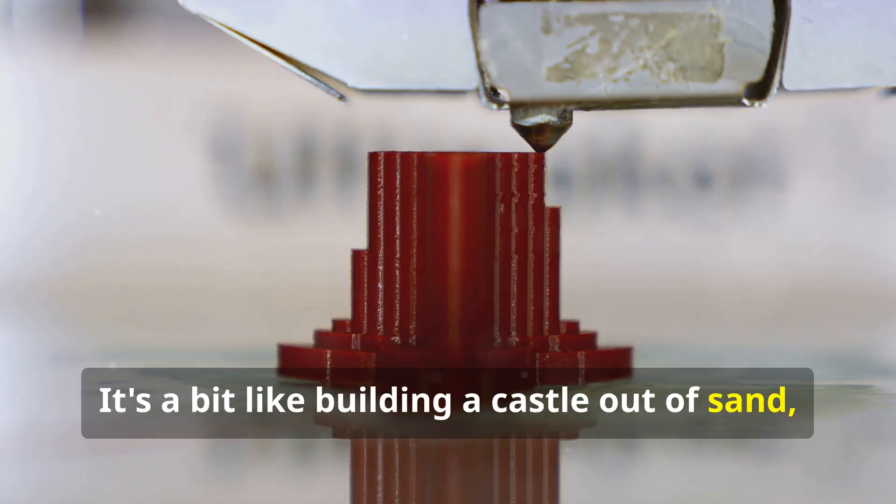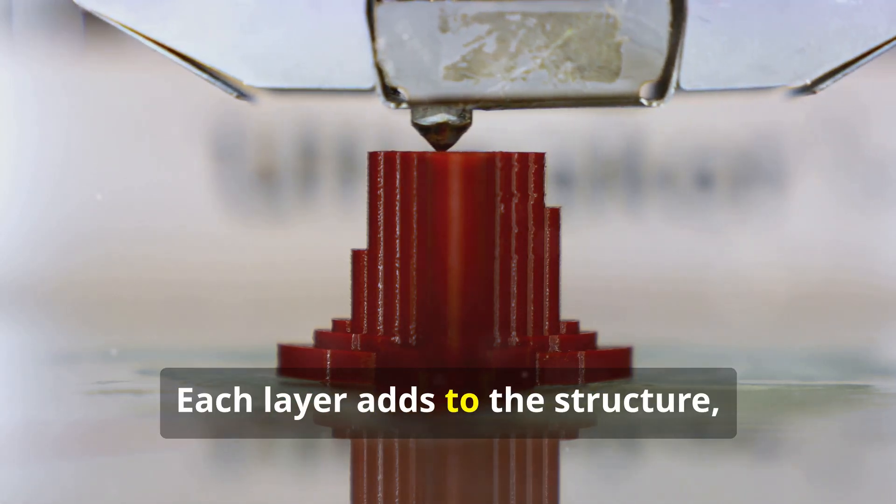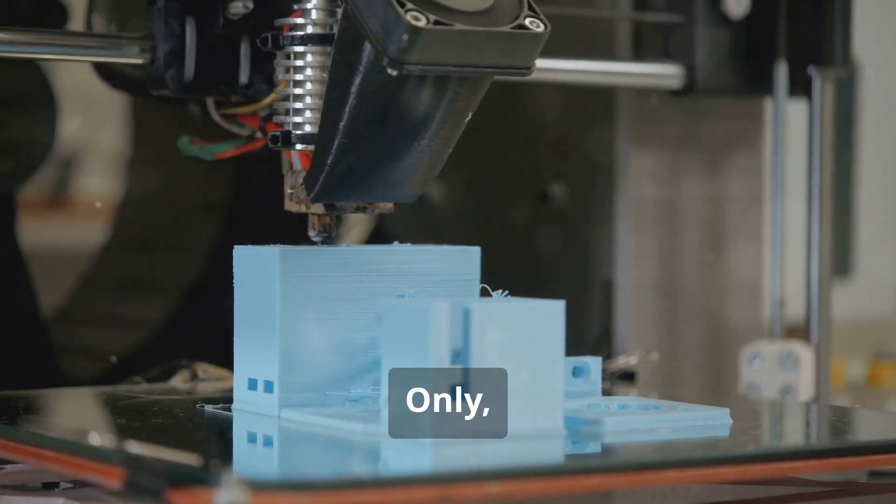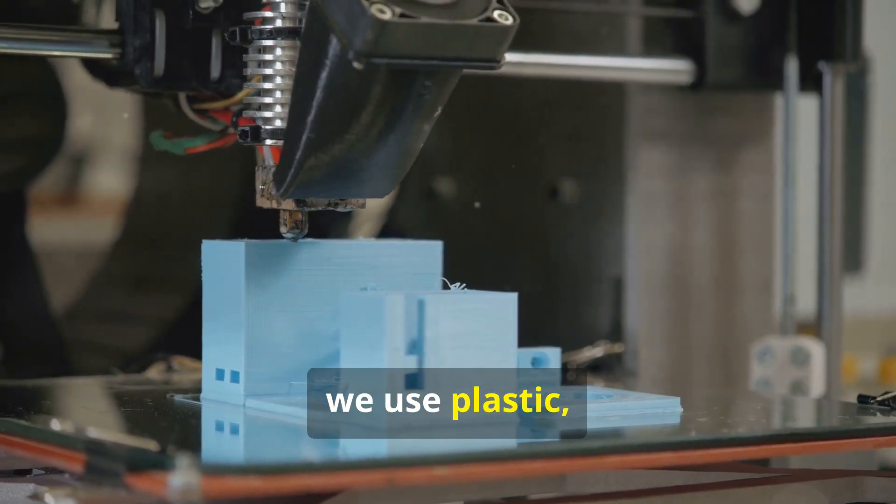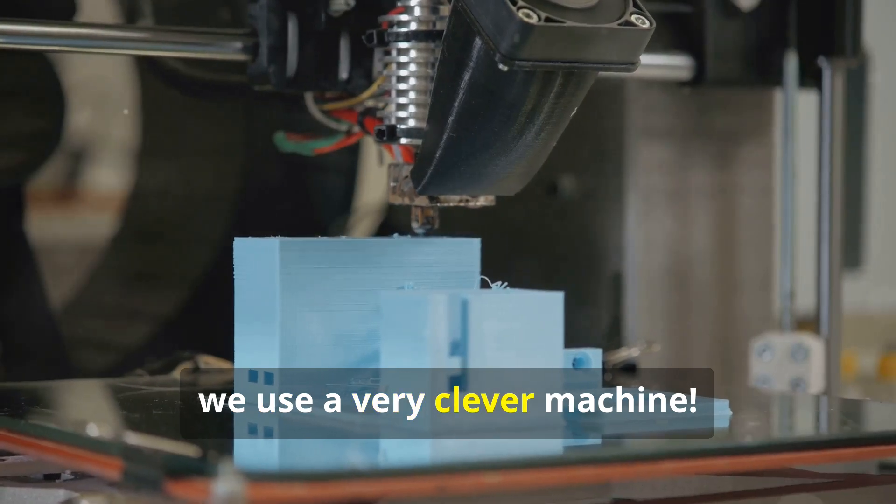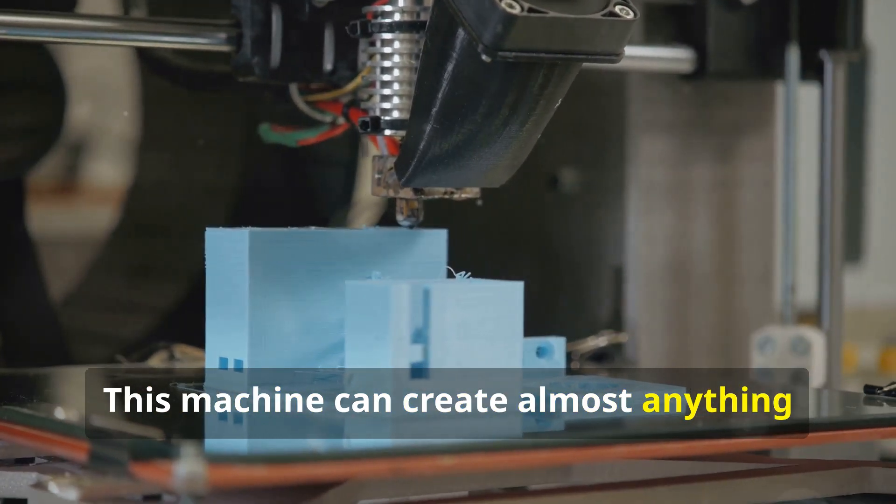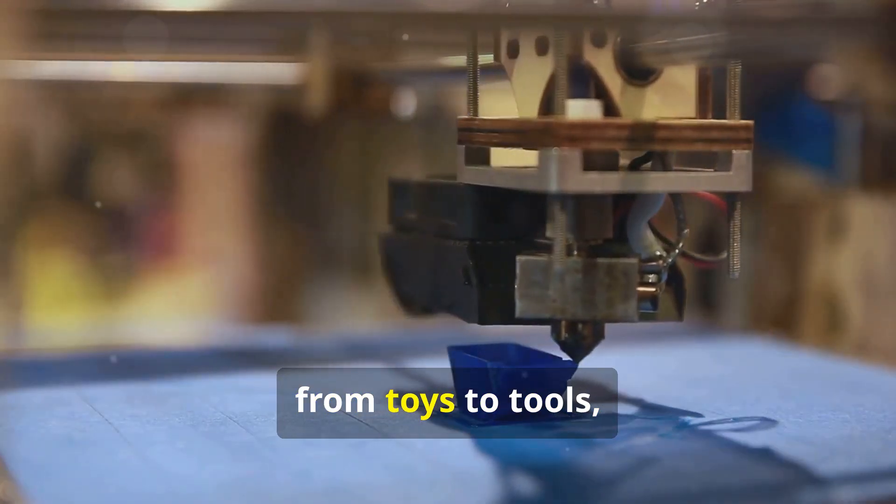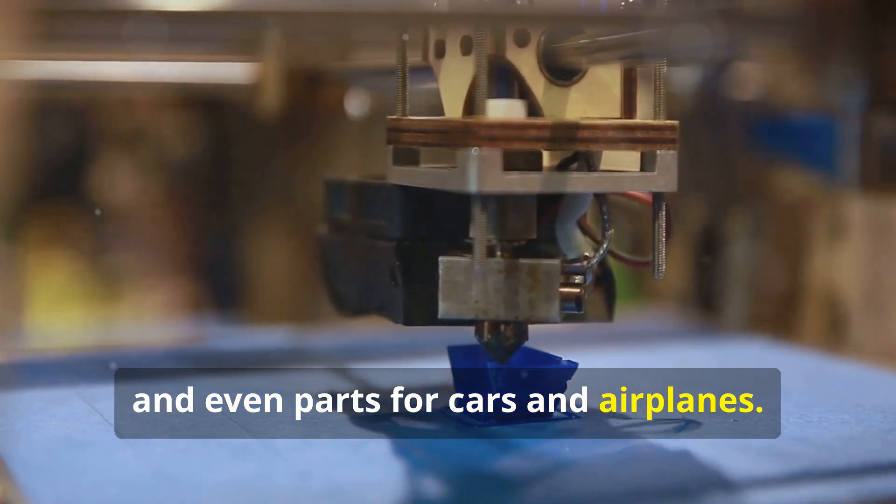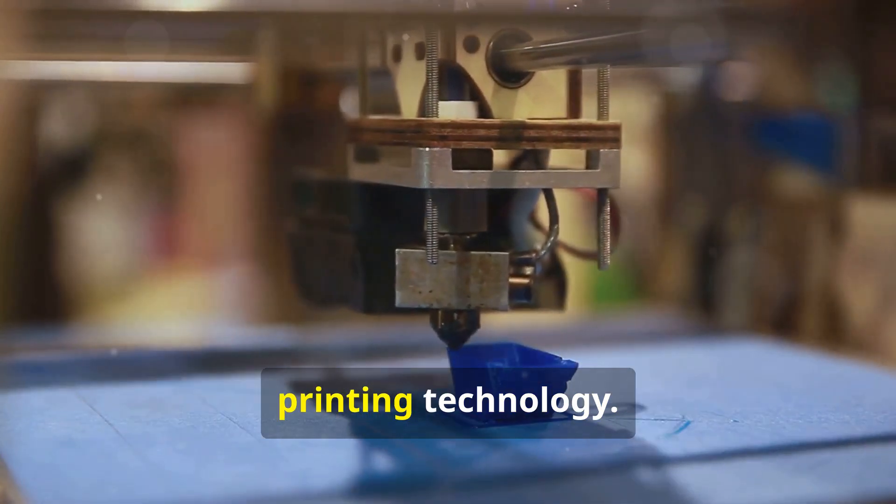It's a bit like building a castle out of sand, one grain at a time. Each layer adds to the structure, making it more robust. Only instead of sand we use plastic, and instead of our hands we use a very clever machine. This machine can create almost anything you can imagine, from toys to tools and even parts for cars and airplanes. The possibilities are endless with 3D printing technology.